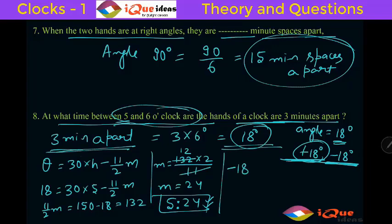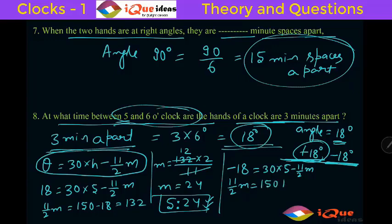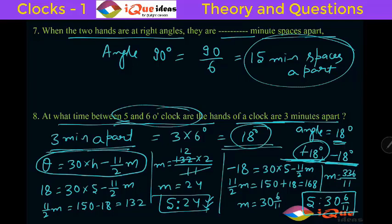For the second case with theta = −18: −18 = 150 − (11/2)m, so 11m/2 = 168, giving m = 336 divided by 11, which is 30 and 6/11. So the second time is 5 hours 30 and 6/11 minutes, written as 5:30(6/11). The two moments when the hands are 3 minute spaces apart between 5 and 6 o'clock are 5:24 and 5:30(6/11).